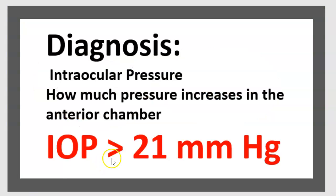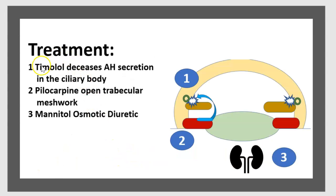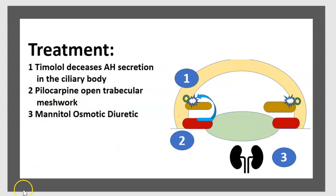In summary: intraocular pressure over 21 mmHg is the key diagnostic threshold. Timolol acts on the ciliary body, pilocarpine acts on the trabecular meshwork, and mannitol is an osmotic diuretic.